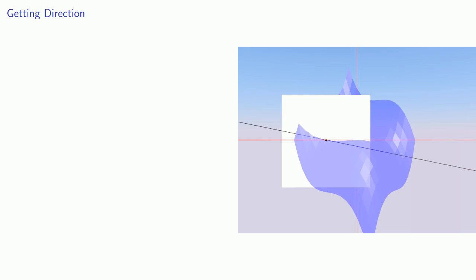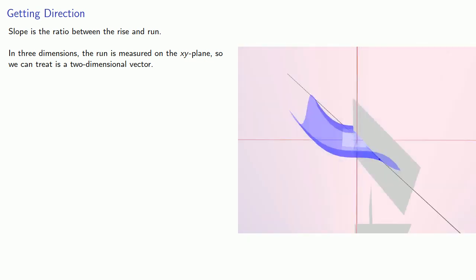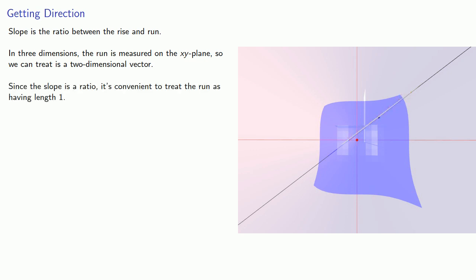So how do we find that directional derivative? Remember that slope is the ratio between the rise and the run. In three dimensions, the run is going to be measured on the x-y plane, so we can treat it as a two-dimensional vector. Since the slope is a ratio, it's convenient to treat the run as having length 1, so we'll want our vector to have magnitude 1.